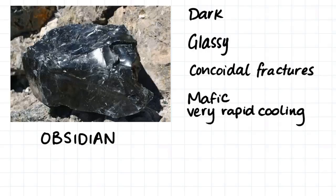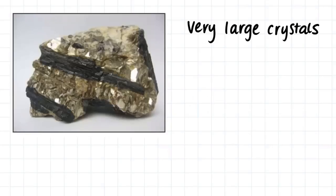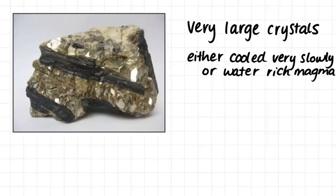This sample here shows very large crystals, which indicates that the molten rock either cooled very, very slowly or it formed from a very water-rich magma. Some of the crystals of this sample are euhedral because we can see their defined faces and edges. This rock is pegmatite.